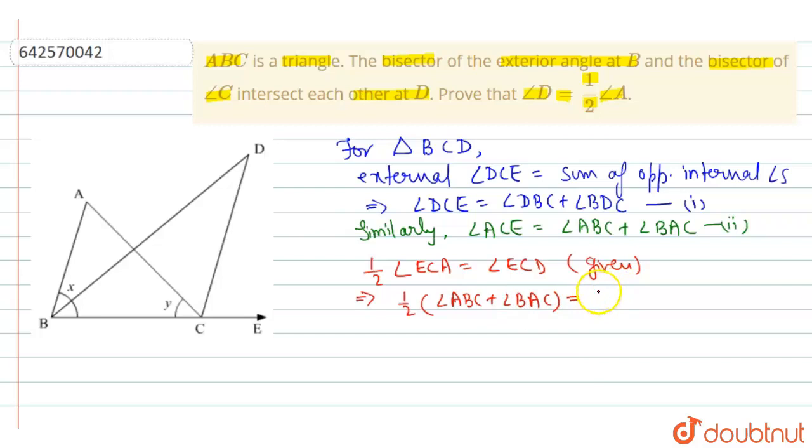And these are from equation 1 and 2. So this implies half of angle ABC is angle B plus half of angle BAC is angle A, that will be equal to angle DBC which can be written as half of angle B plus angle BDC is angle D.